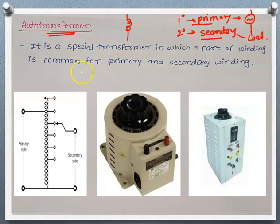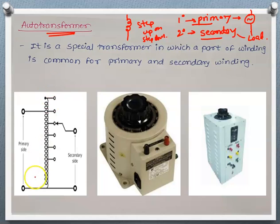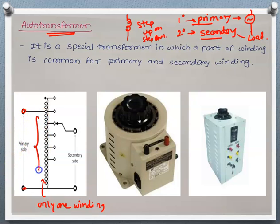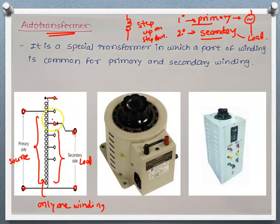According to the requirement, which part is primary and which part is secondary determines whether we use the autotransformer as a step-up or step-down transformer. Here in the symbolic representation, there is only one winding and terminals are brought out for connection. This part acts as primary, these are the secondary terminals connected to the load, and these connection points brought out are called tappings.